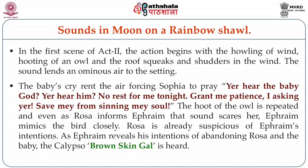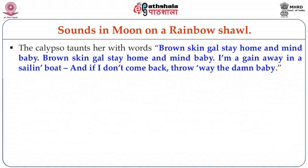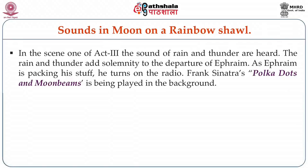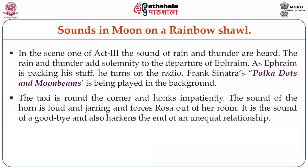The hoot of the owl is repeated, and even as Rosa informs Ephraim the sound scares her, Ephraim mimics the bird closely. Rosa is already suspicious of Ephraim's intentions. As Ephraim reveals his intentions of abandoning Rosa and the baby, the calypso 'Brown-Skinned Girl' is heard, taunting her with the words: 'Brown-skinned girl, stay home and mine baby. Brown-skinned girl, stay home and mine baby. I am going away in a sailing boat and if I don't come back, throw away the damn baby.' In Scene 2, as Mavis and Prince make up, the sound of a wedding is heard, accentuating the effect of Mavis' words: 'Always get the ring first, then get the baby.' In Act 3, the sound of rain and thunder adds solemnity to Ephraim's departure. As he packs his stuff, he turns on the radio — Frank Sinatra's 'Polka Dots and Moonbeams' plays in the background. The taxi honks impatiently; the sound of the horn is loud and jarring and forces Rosa out of her room, heralding the end of an unequal relationship.